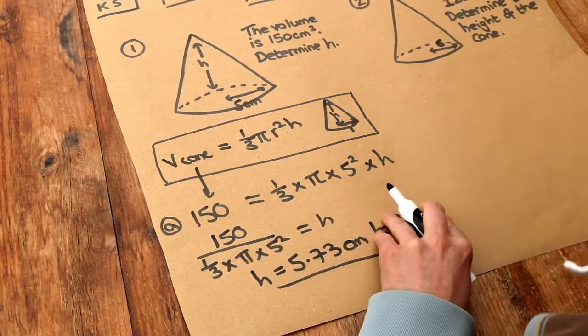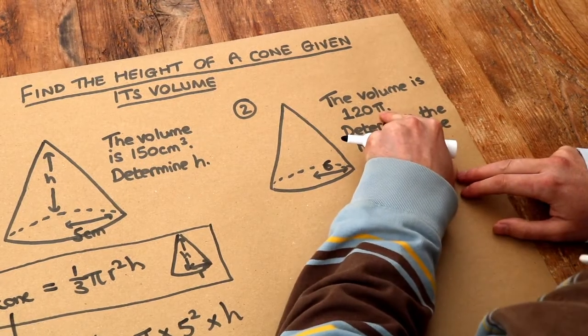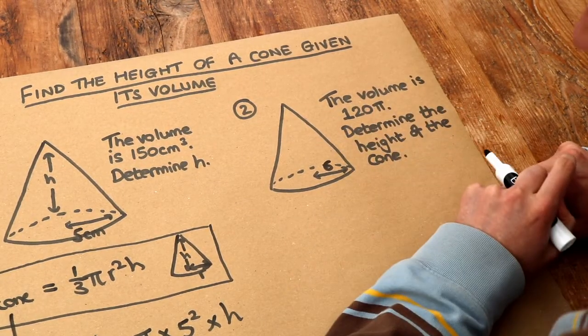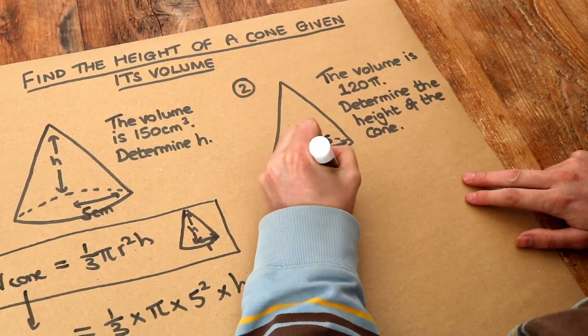What about the second one? Now the difference with this one is that the volume is given in terms of pi. Now when they do that, the pi will typically cancel in your equation.